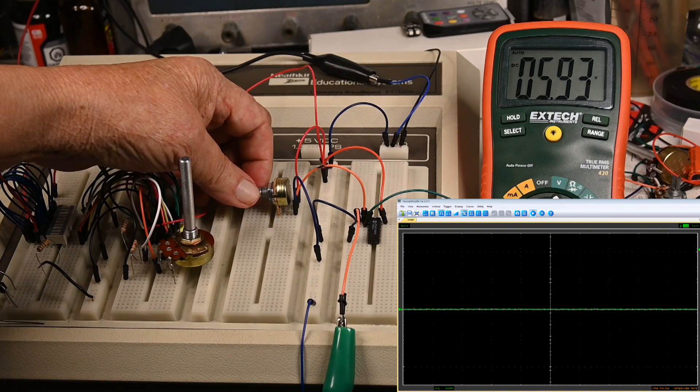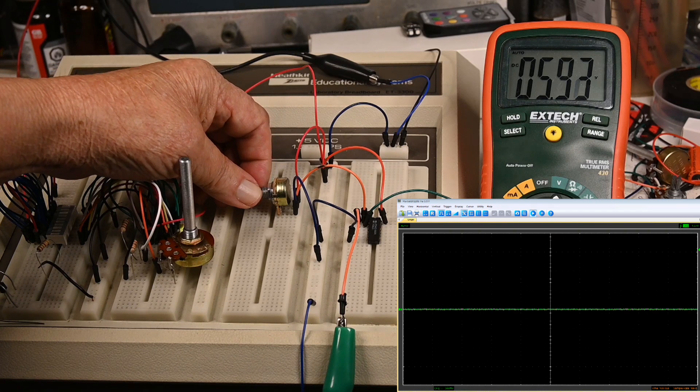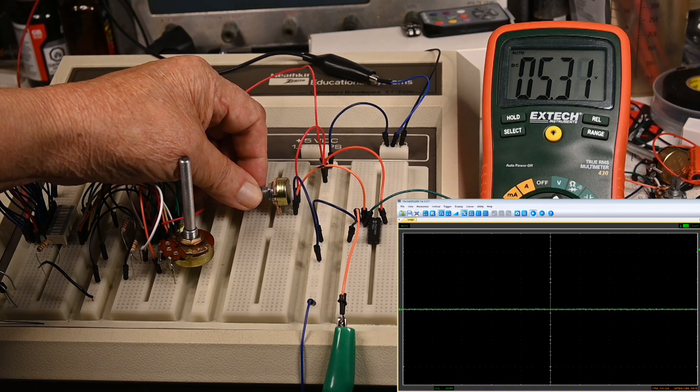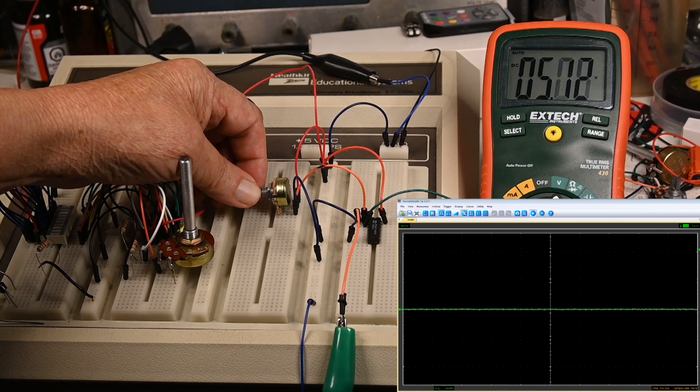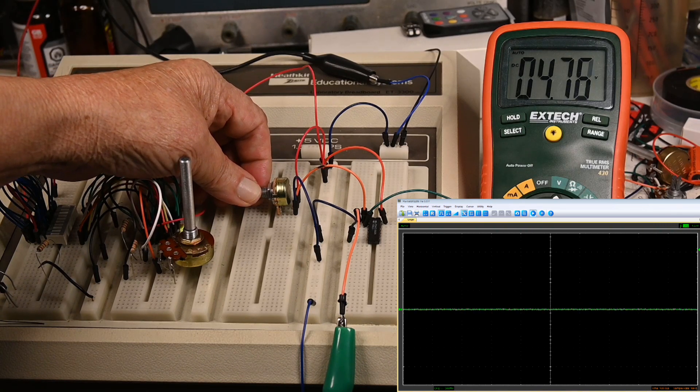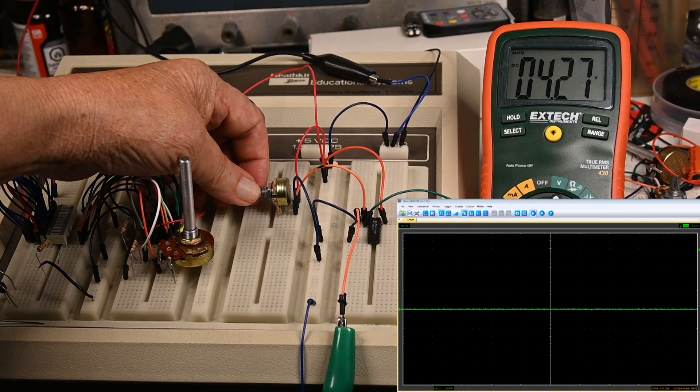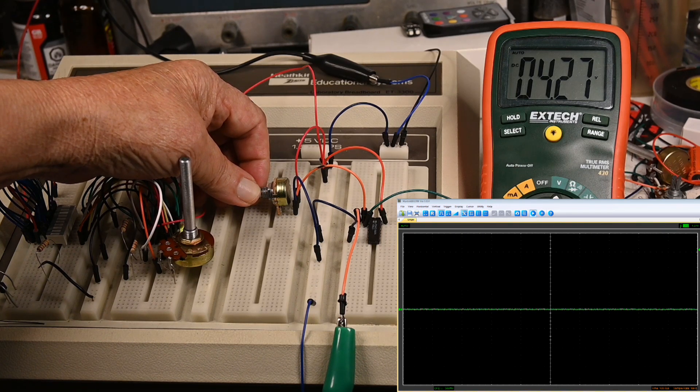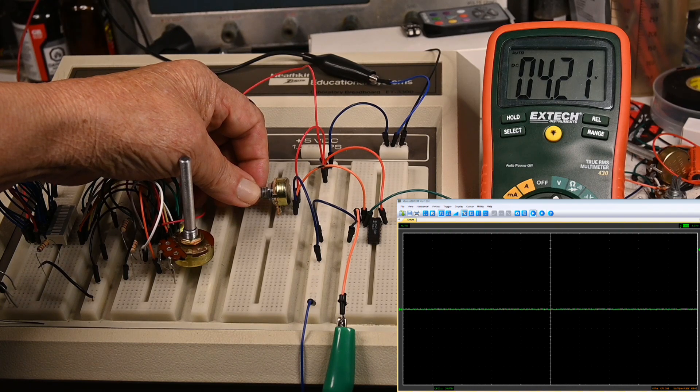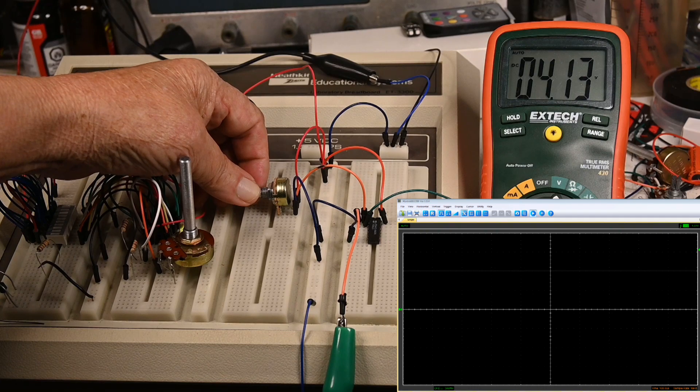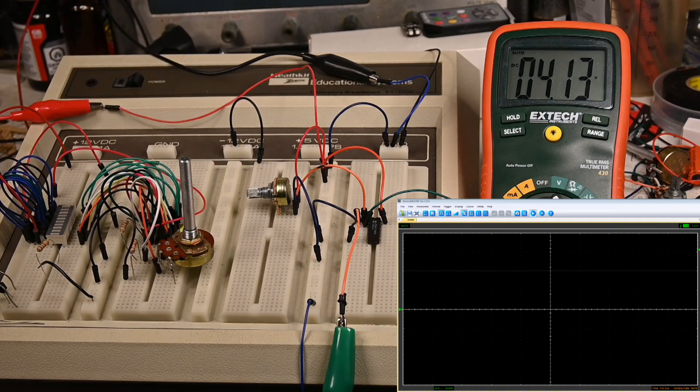Okay, now let's see. We're going to find the off trigger. There it is. About 4.1 volts.